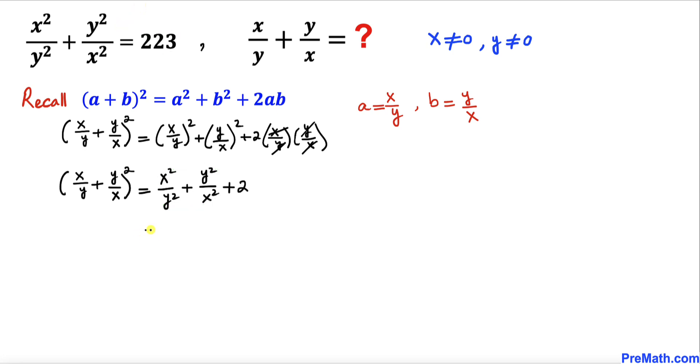So therefore on the right hand side I'm going to replace this one by 223 plus 2 which equals 225. Now let's go ahead and undo this square by taking a square root on both sides of this equation. Here we can see that this square and square root they undo each other,